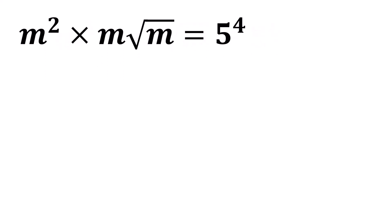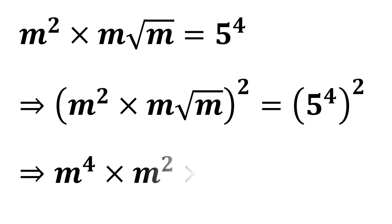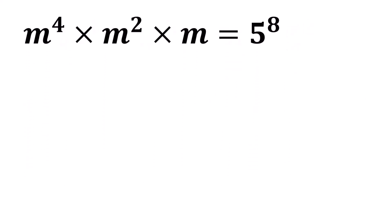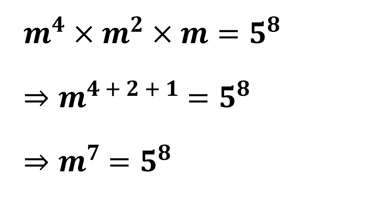Finally, squaring both sides, we can write the square of m squared times the square root of m, which equals 5 to the power of 4 all squared. Simplifying this, we get m to the power of 4 times m squared times m, which equals 5 to the power of 8. Applying the law of exponents, we can write m to the power of 4 plus 2 plus 1 equals 5 to the power of 8. So, we get m to the power of 7 equals 5 to the power of 8.